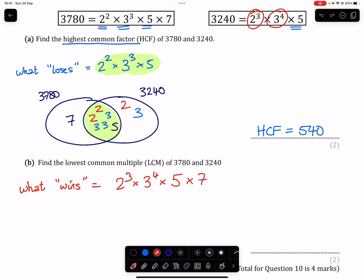All of those multiplied together is going to give us an answer of 22,680. And that's if we use the what wins method.